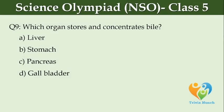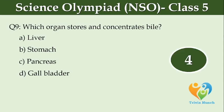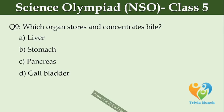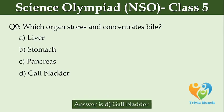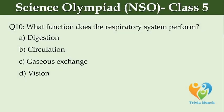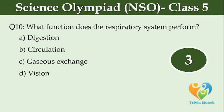Which organ stores and concentrates bile? Option A: liver. Option B: stomach. Option C: pancreas. Option D: gallbladder. What function does the respiratory system perform? Option A: digestion. Option B: circulation. Option C: gaseous exchange. Option D: vision.